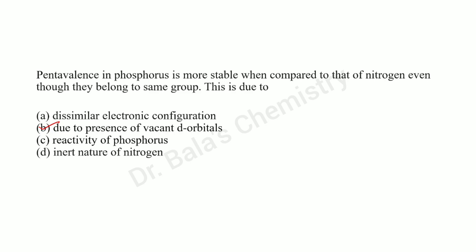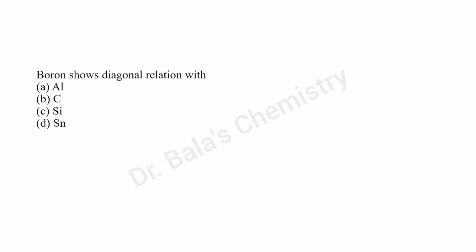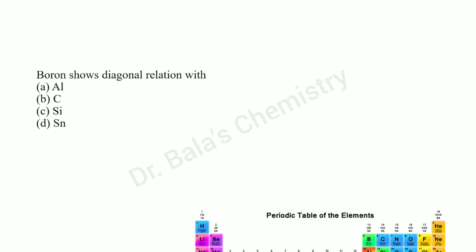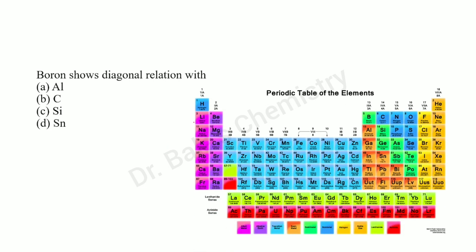This is due to the presence of vacant d-orbitals in phosphorus, which is the right answer. Boron shows a diagonal relationship with silicon — the properties match almost exactly. That's the right answer.